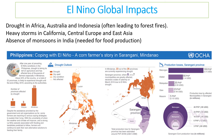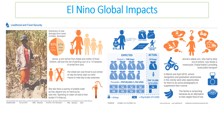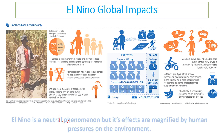El Niño also has global impacts, changing weather across different parts of the world. It often causes droughts in Africa, Australia, and Indonesia, which can trigger forest fires. Other regions experience heavy storms, and in India there have been absences of monsoons, affecting food production. El Niño affects livelihoods and crop yields. Importantly, El Niño is not caused by climate change, but it increases the impact of climate change — if farmers are already struggling due to drought and El Niño hits, its impacts magnify the climate change effects.